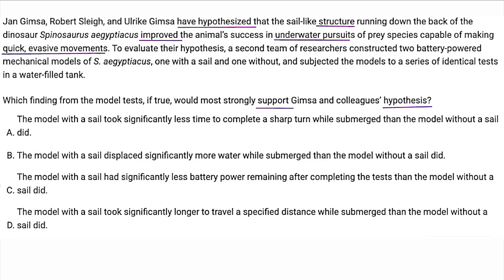B: the model with a sail displaced significantly more water than the model without a sail — it's not about displacing water, so B is out. C: the model with the sail had significantly less battery power — I don't care about battery power, so C is out. D: the model with a sail took significantly longer to travel a specified distance while submerged than the model without a sail. So let's look at the difference between A and D. A is talking specifically about a sharp turn, whereas D is talking about traveling a specified distance. The part we were focusing on was quick evasive movements. A sharp turn is a quick evasive movement, so I'm going to eliminate D and A is my answer.